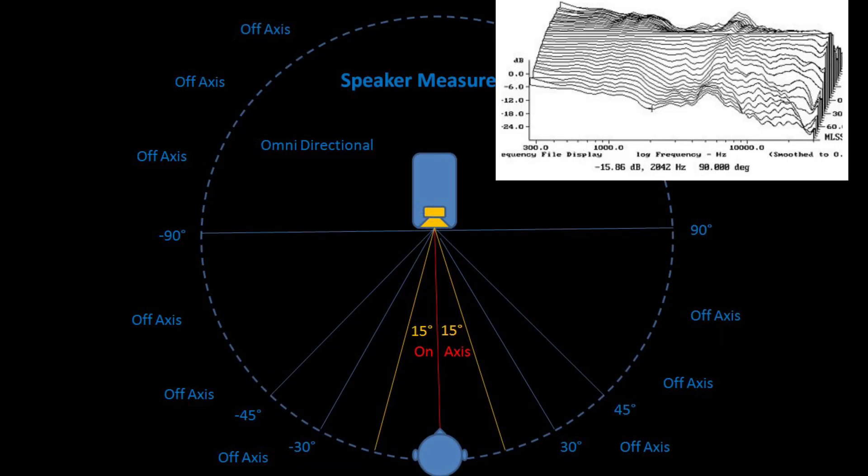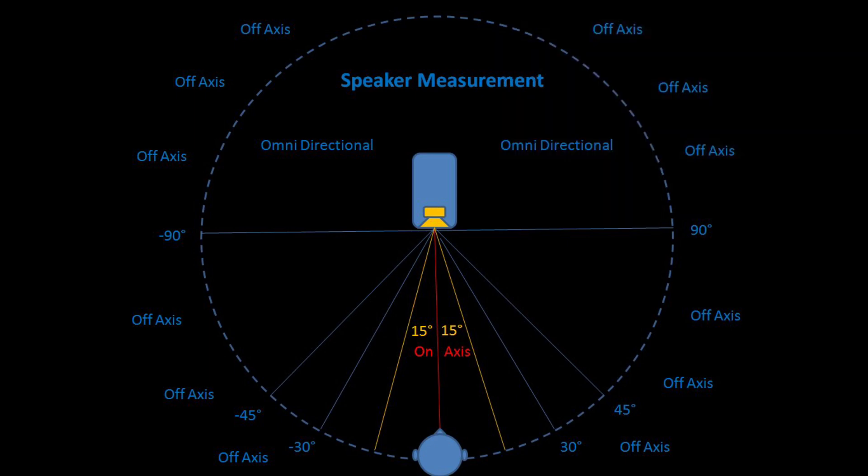Comparing to the old B&W 802D horizontal off-axis response curve as showed on the top right, we can see they are quite different for both mid-range and the treble. This is one of the reasons why they sound quite differently in the listening room.